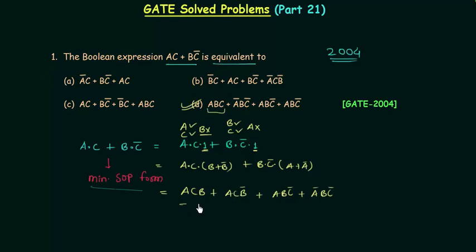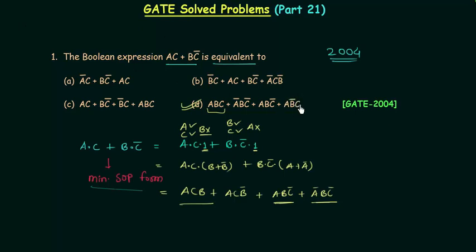We have ABC, we have A complement BC complement, ABC complement, and this is AB complement C. We have AB complement C in option D. So option D is the correct option.